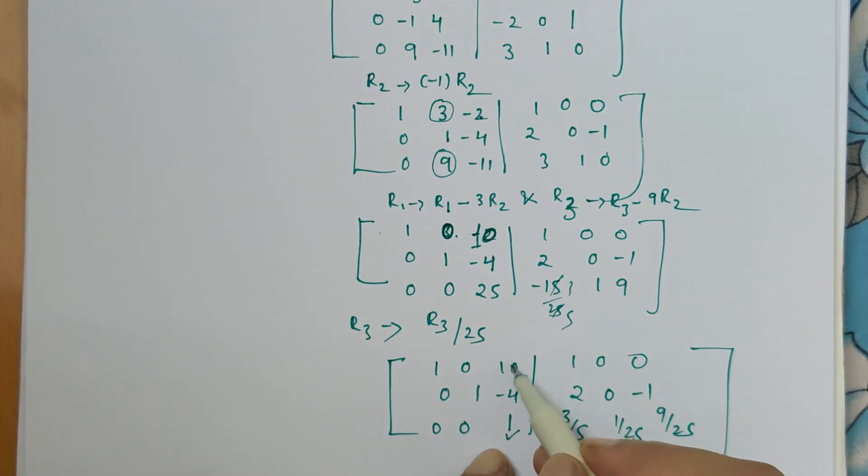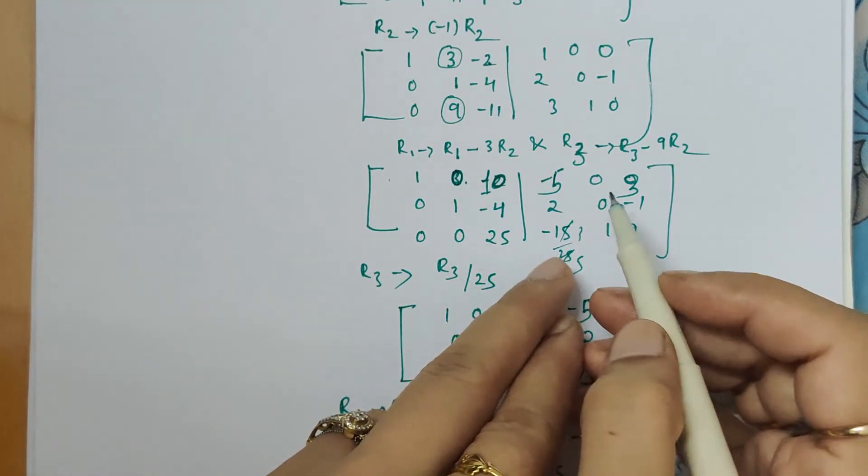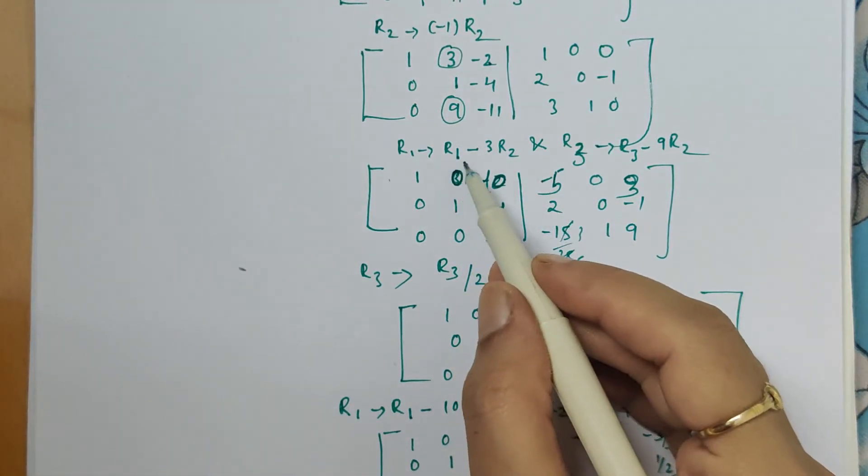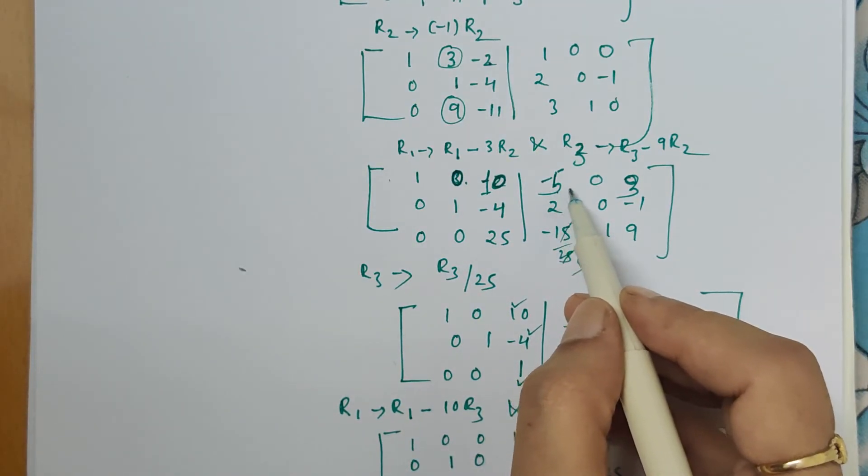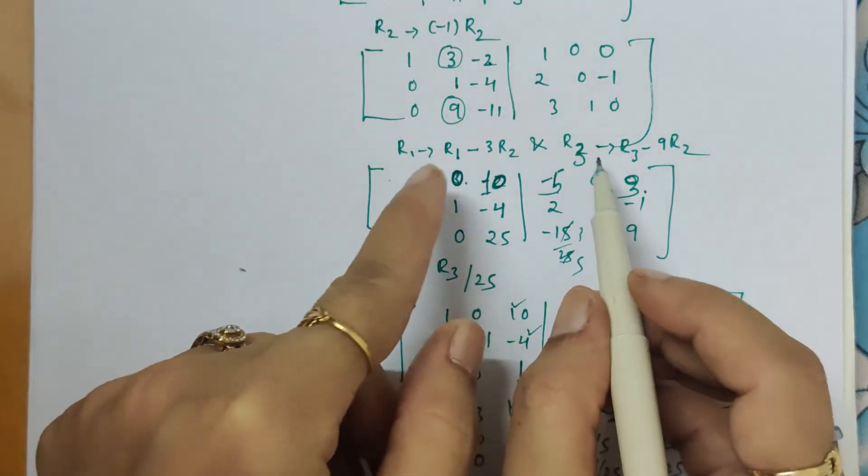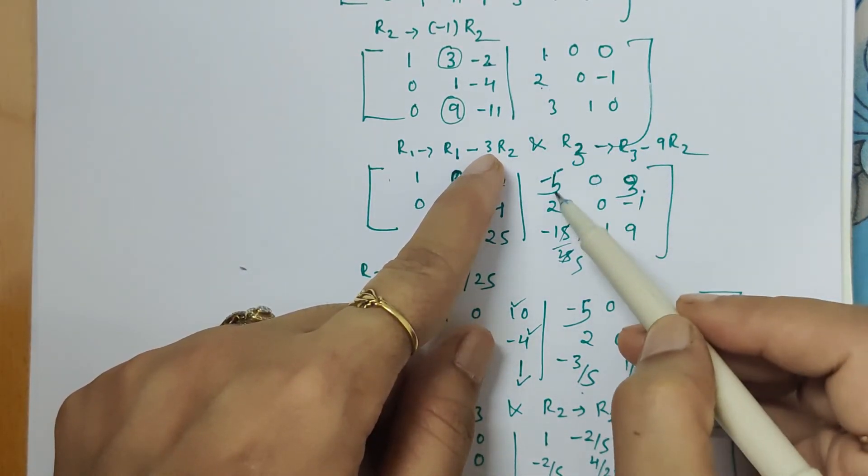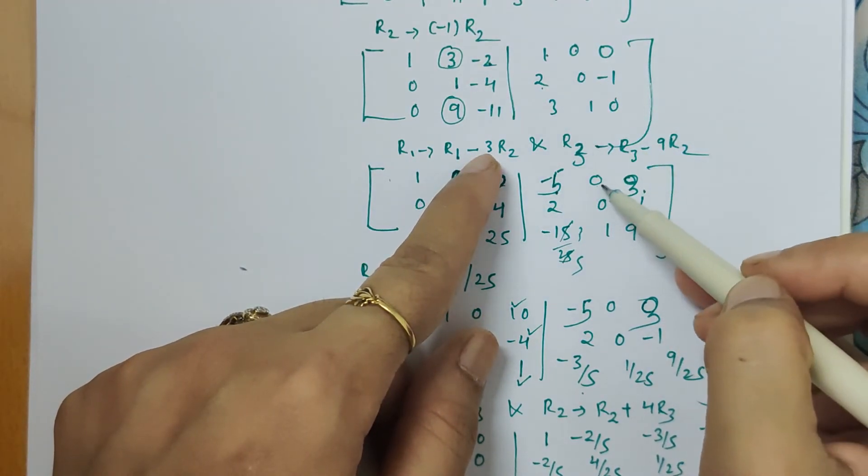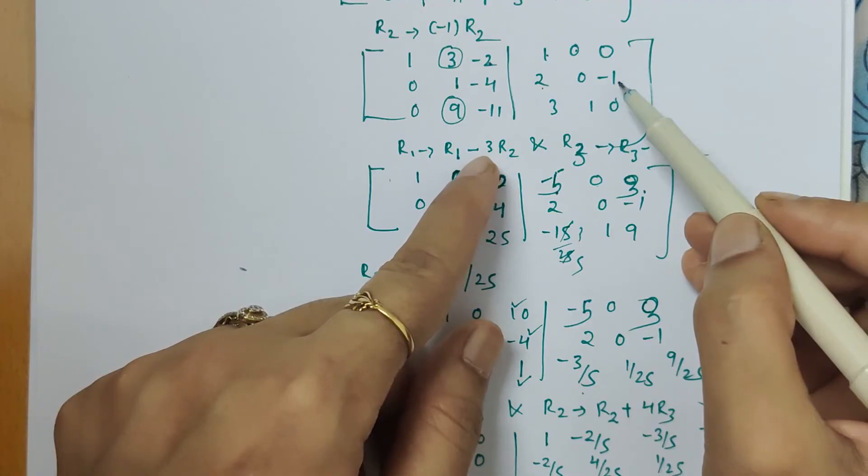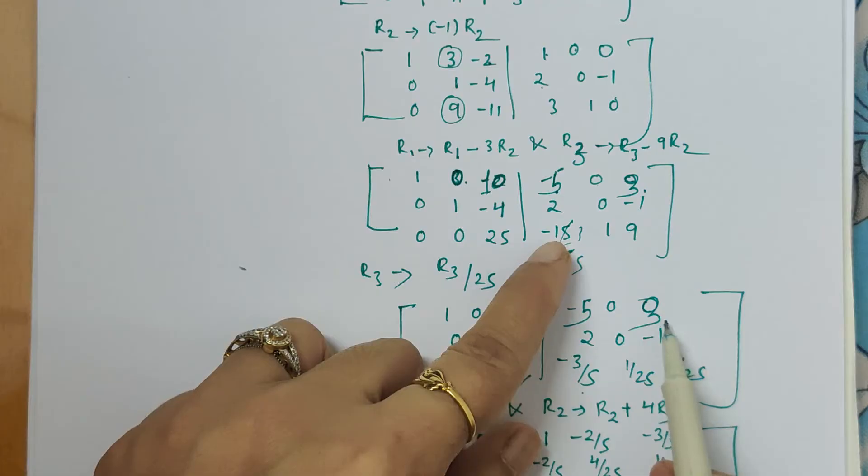Now we will make use of this 1 and make this and this entry 0. Here by applying this operation, these elements also get changed: minus 5, 0, 3 we get by applying this operation. See, 1 minus 6 gives minus 5, and 0 minus 3 into 0 is 0, 0 minus 0 is 0, and 0 minus into minus is plus 3 is 3. So here we have these elements minus 5, 0, 3.